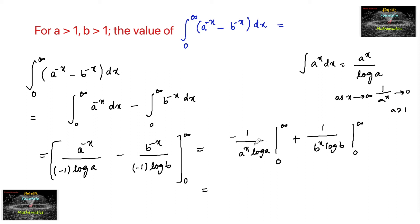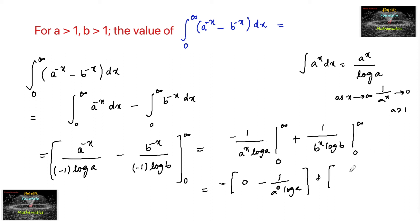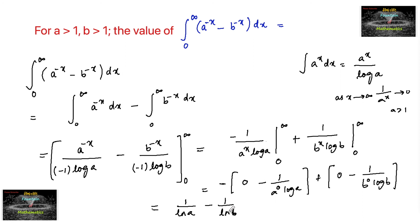Applying the upper limit (x → ∞), both terms go to 0. For the lower limit (x = 0): 1 upon a to the power of 0 is 1, so we get minus of minus 1 upon log a, which is plus 1 upon log a. Similarly, the lower limit gives minus 1 upon log b. Therefore the final answer is 1 upon log a minus 1 upon log b.